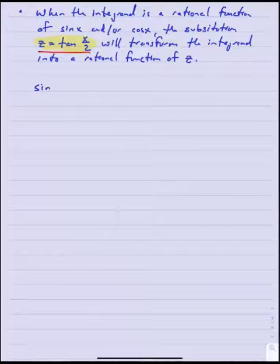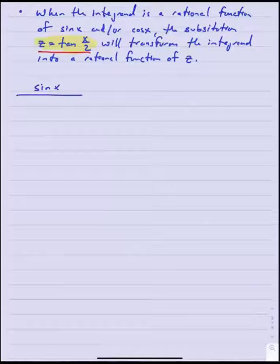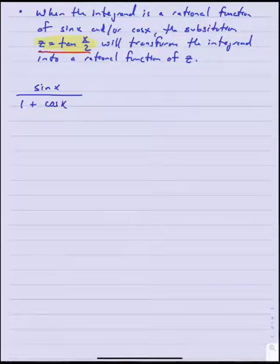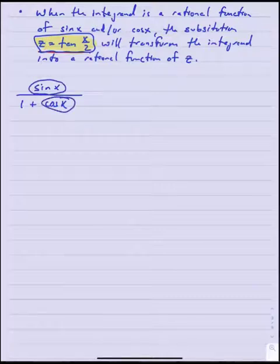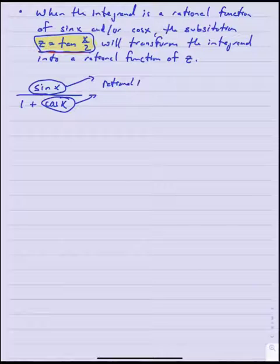So if we're talking about a rational function of sine and cosine, we might have something like sine of x over 1 plus cosine of x. This substitution is going to allow us to eliminate the sine and the cosine and convert both of those to just normal rational functions.